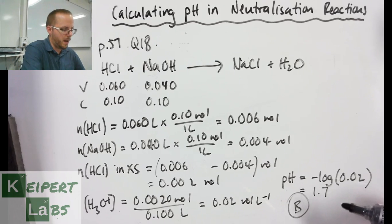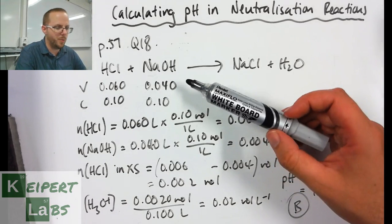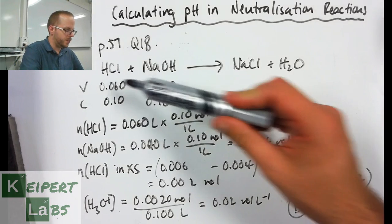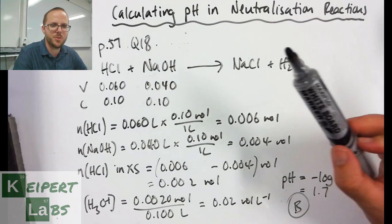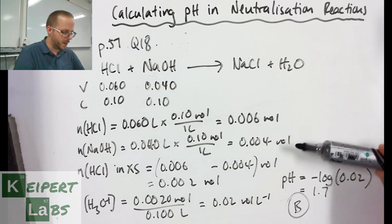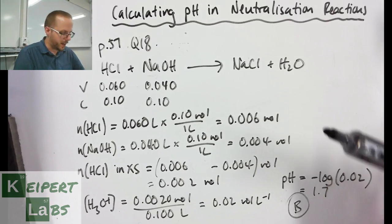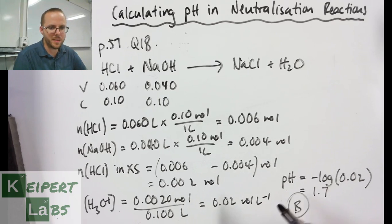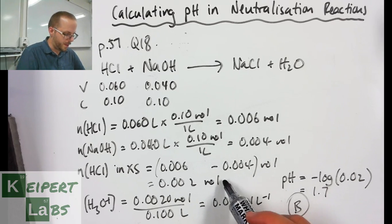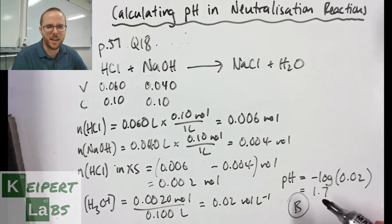So we had an equation. What I did here is just to keep my information ordered. I wrote down where I had volumes and concentrations so I could keep track of things more easily. I calculated the moles of each substance and then I used the difference between those, taking the lesser one away from the larger one, to calculate how many moles of acid were in excess.